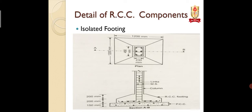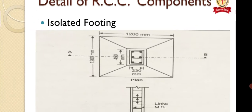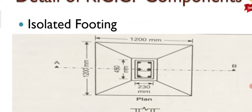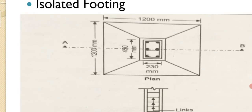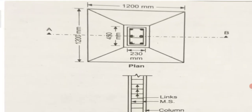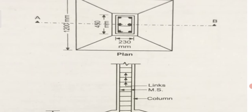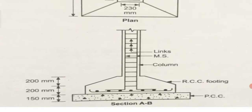The next item is the detail of RCC components. The first is isolated footing, shown in plan and section. In the plan, the center element is the column going upward, and around it is the footing with dimension 1200×1200. The column dimension is 450×450, and the internal bars are at 230 mm. In the section, the height is detailed: PCC is 150 mm thick, then 200 mm of RCC footing, then an inclined part of 200 mm also as footing, and the column continues above.